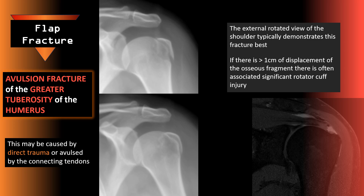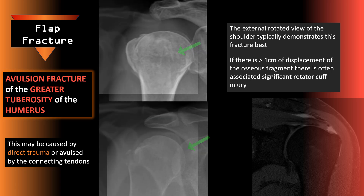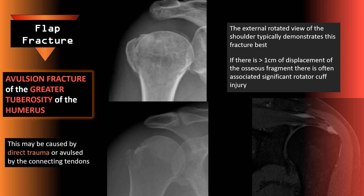A common fracture of the shoulder is a flap fracture — an avulsion fracture of the greater tuberosity of the humerus. The external rotated view of the shoulder typically demonstrates this fracture best. If there is over one centimeter of displacement of the osseous fragment, there is often associated significant rotator cuff injury, so MRI of the shoulder is often recommended.